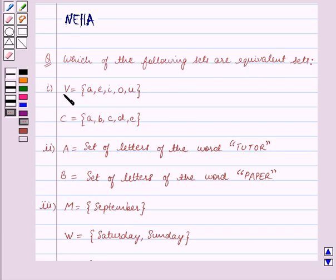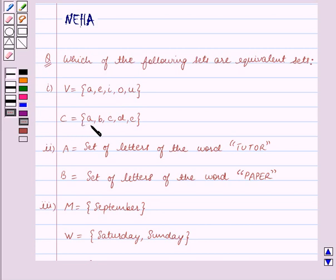The first part: B is equal to the set containing the elements A, E, I, O, U. C is equal to the set containing the elements A, B, C, D, E.